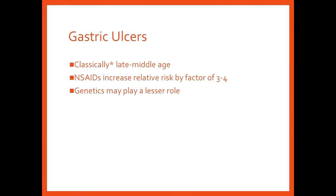Gastric ulcers, classically happening a bit later than the duodenal ulcers. NSAIDs will contribute to these a lot more. They increase your risk by about three or four times. And we think that genetics don't play as much role in the stomach as they do in the duodenum.